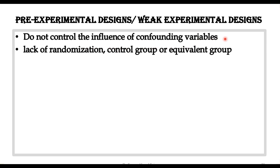And therefore we are not in a good position to explain the causality of the independent variable with the dependent variable, because the confounding or extraneous variables are not controlled. The second important point is that there is a lack of randomization. Remember, randomization is one of the strongest and most powerful tools of experimental design.